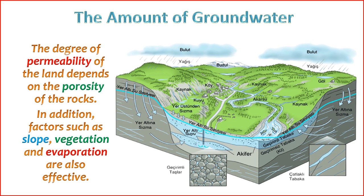5. Climate — precipitation patterns, temperature, and humidity all play a role in groundwater levels. Arid regions may have lower groundwater levels due to reduced precipitation. 6. Human activities — pumping water from wells, land use changes, and the construction of impervious surfaces can impact groundwater levels. Over-extraction can lead to groundwater depletion.